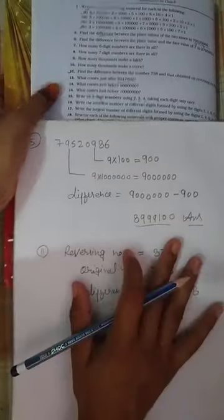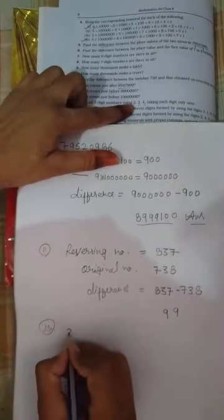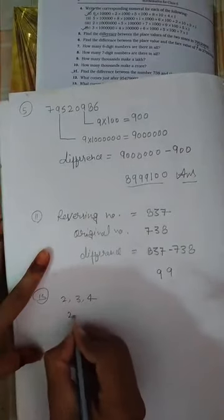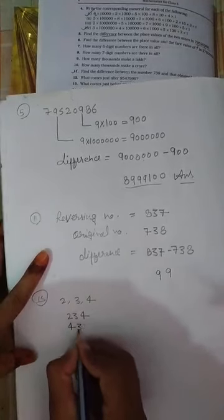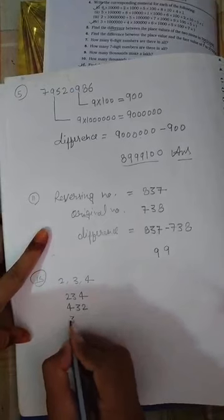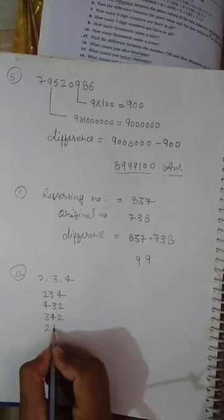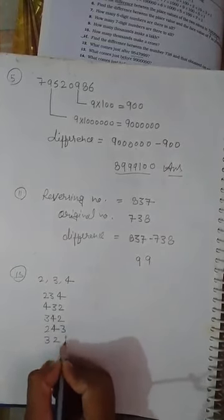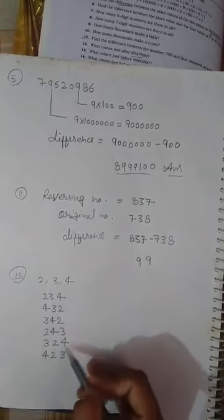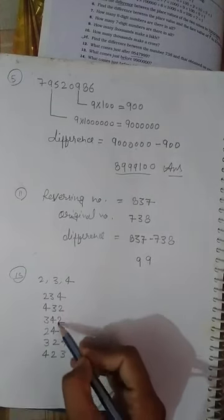Question number 15: Write all 3-digit numbers using 2, 3, and 4, taking each digit only once. So we make all possible 3-digit numbers: 234, then reverse it to 432, then 324, then 243, then 342, then 423. We have a total of 6 different numbers, starting from 234.